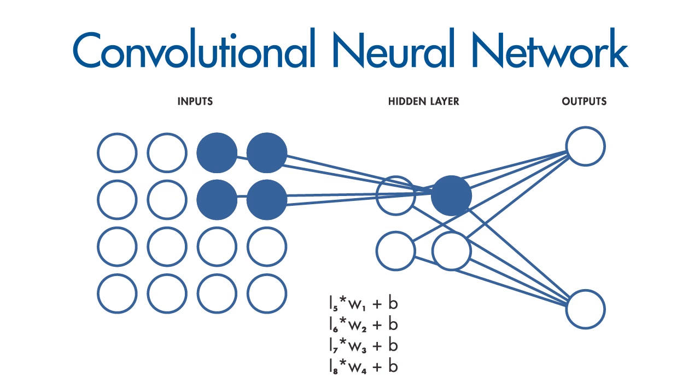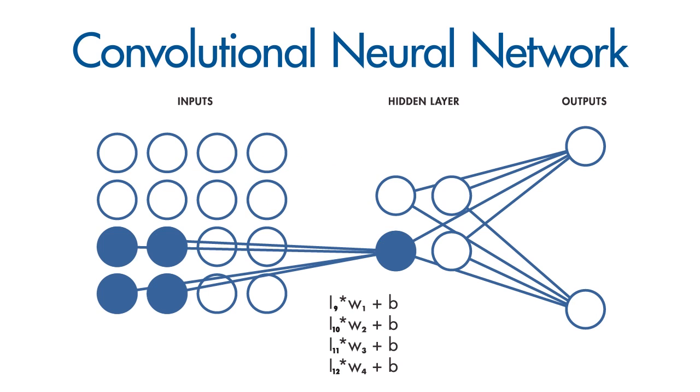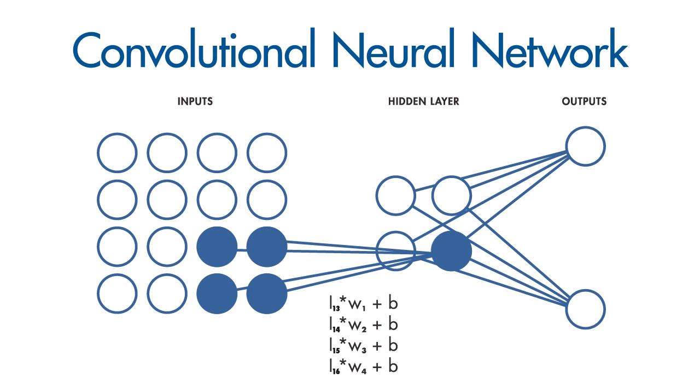This means that all hidden neurons are detecting the same feature such as an edge or a blob in different regions of the image. This makes the network tolerant to translation of objects in an image. For example, a network trained to recognize cats will be able to do so wherever the cat is in the image.